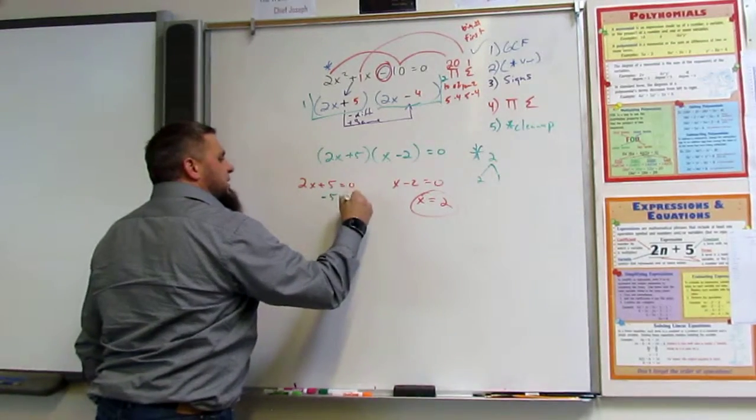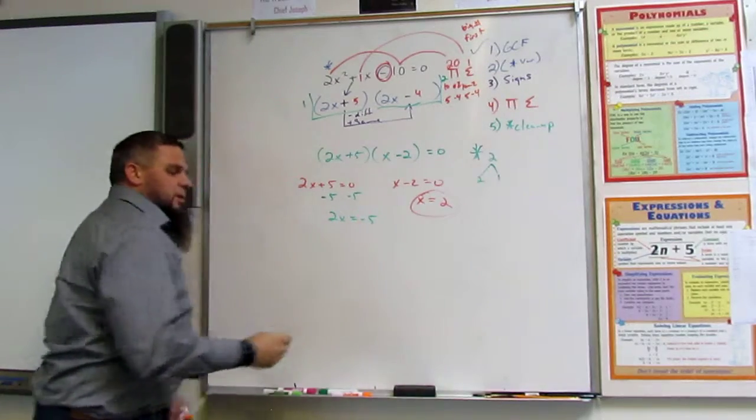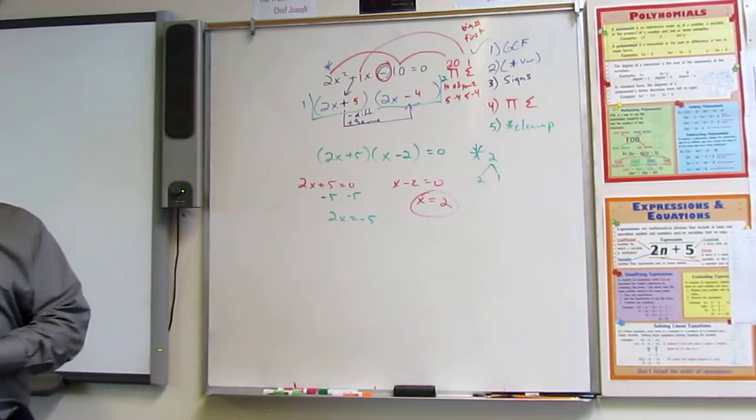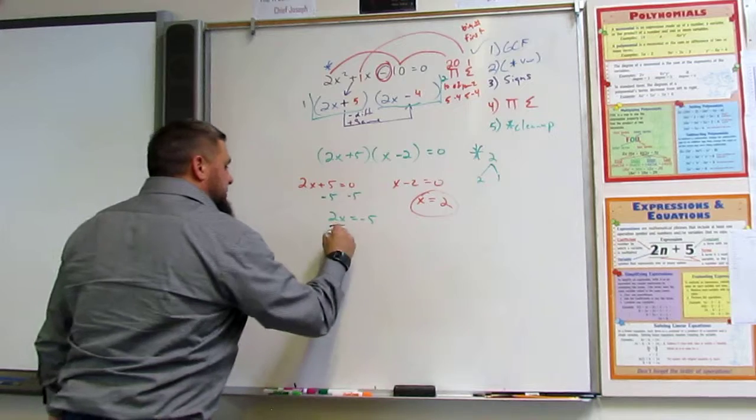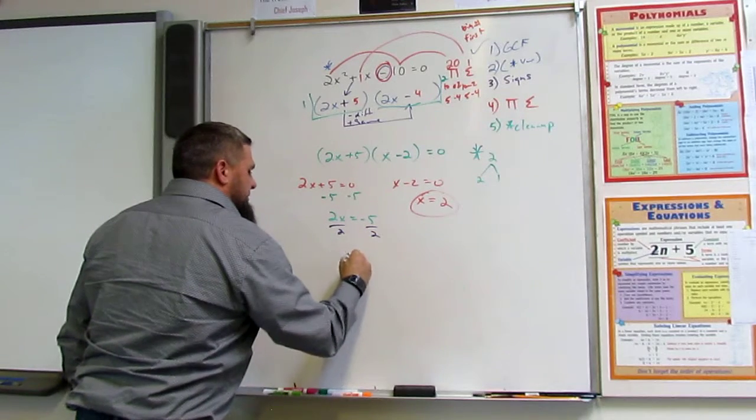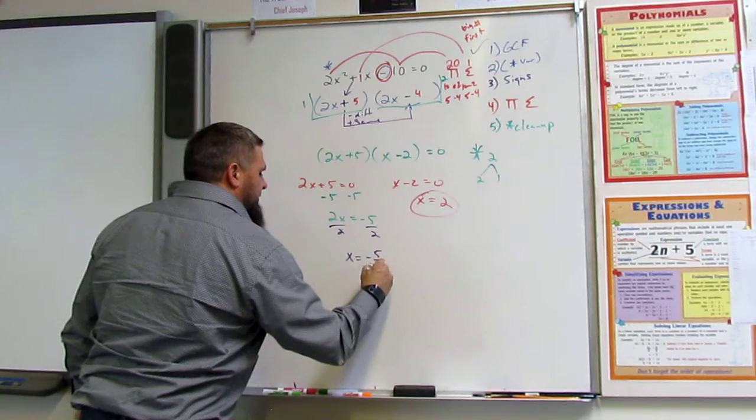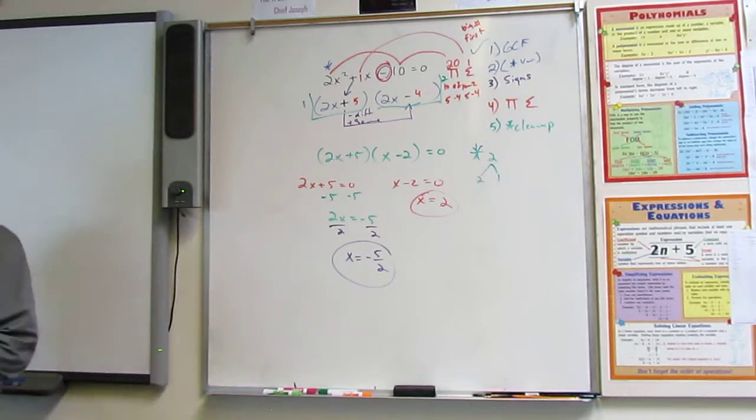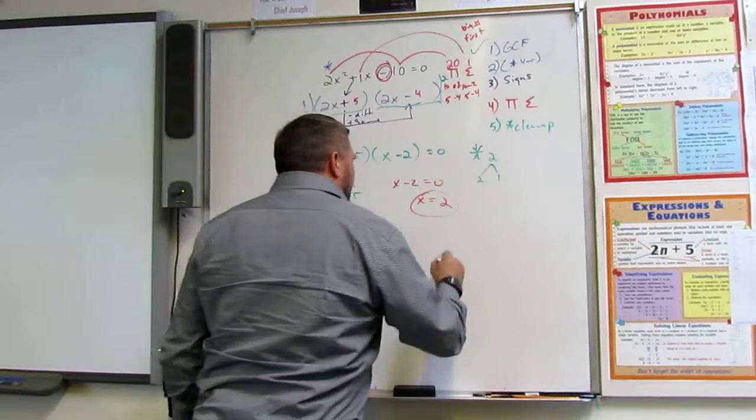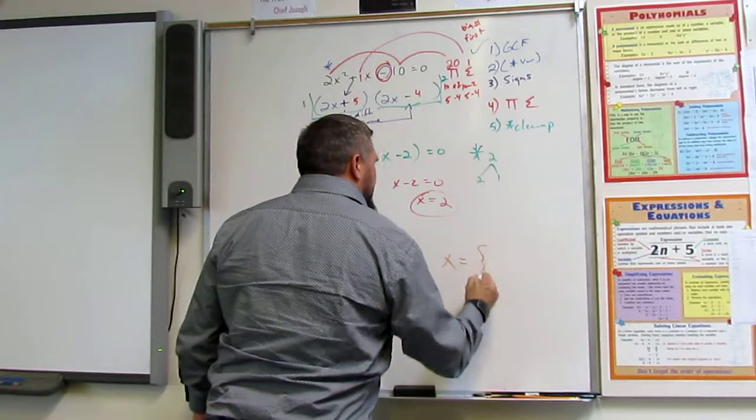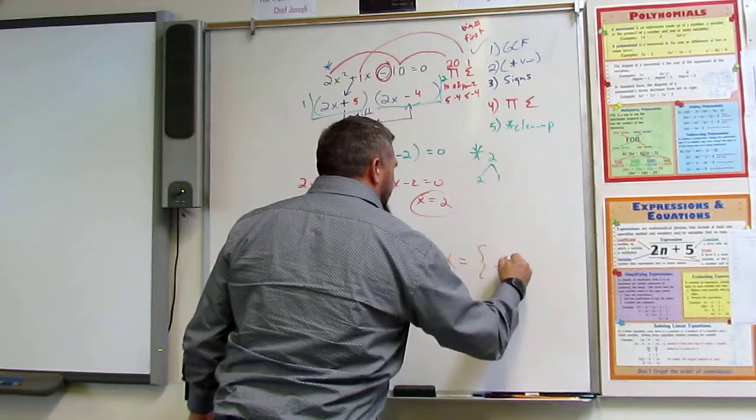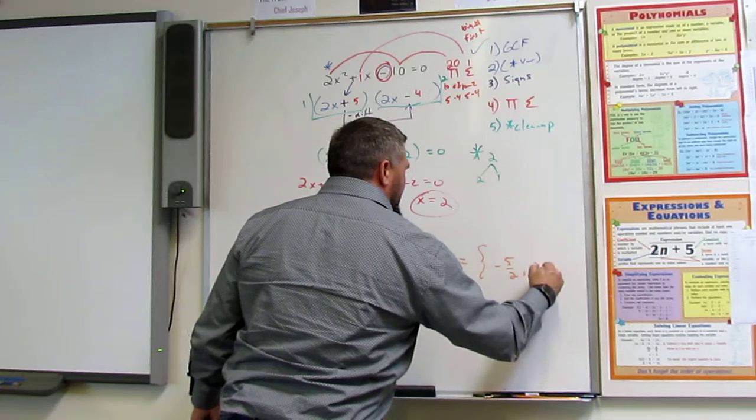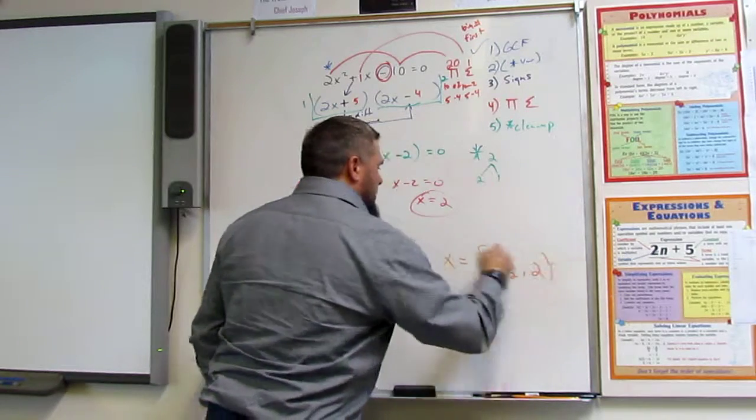And then this one, minus 5 minus 5. 2x equals minus 5. And then what? Divide by 2. Divide by 2. x equals negative 5 over 2. And that is how you do that. So this is, again, two answers. x equals the solution set of negative 5 halves and 2. Okay?